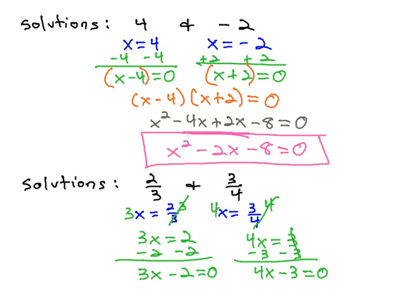Again, now that we have the parts that equal 0, those parts must have been the factors from our original polynomial. 3x minus 2 times 4x minus 3 must have equaled 0.